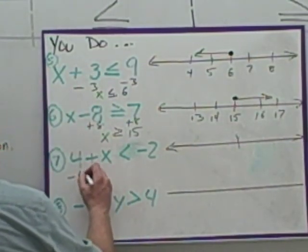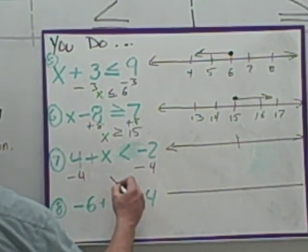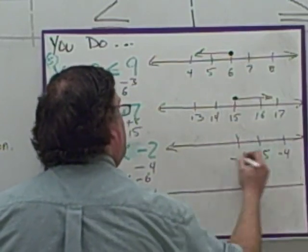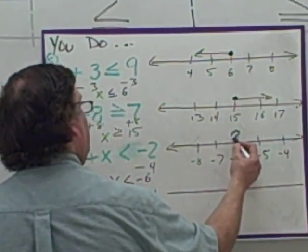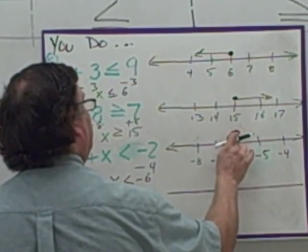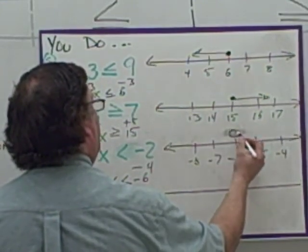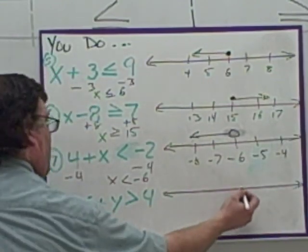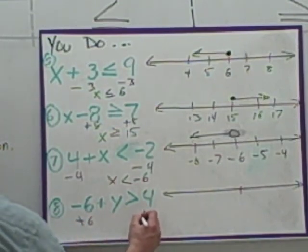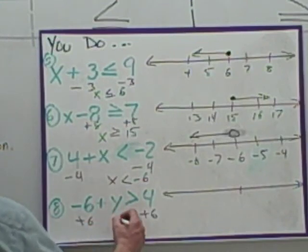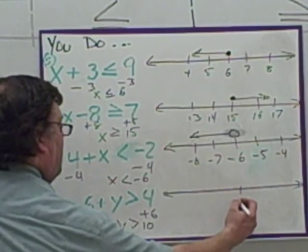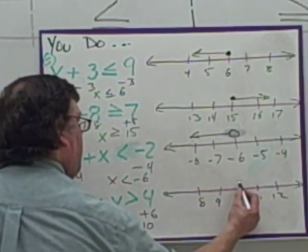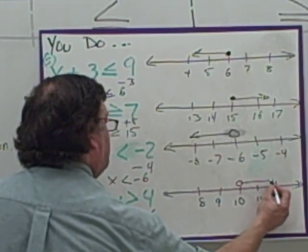Here, subtract four from both sides. We get x is less than negative six. Negative six in the middle — negative five, negative four on one side; negative seven, negative eight on the other. Open circle over the negative six — be careful not to make it look filled in. Less than, so going in this direction. Last one: solving by adding six to both sides — does it matter that we're using y instead of x? No. We get y is greater than ten. Open circle over the ten; arrow going in the greater-than direction. And those are our solutions and graphs.